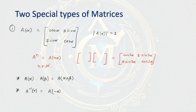Here comes the most interesting property: if we calculate A times A transpose, or A transpose times A, this will always be equal to the identity matrix of second order. That means this type of matrix is always an orthogonal matrix.